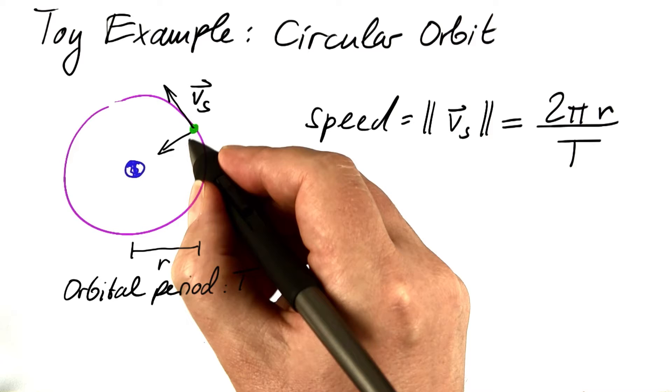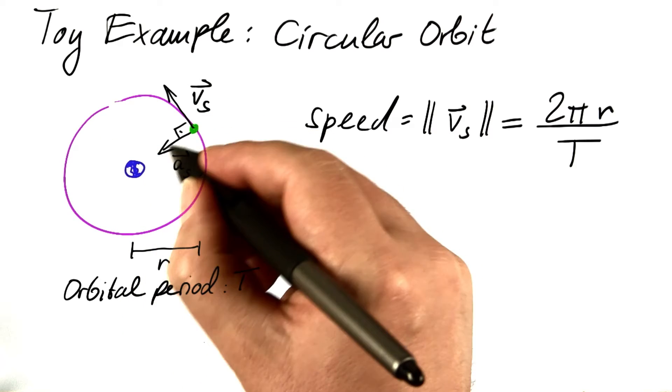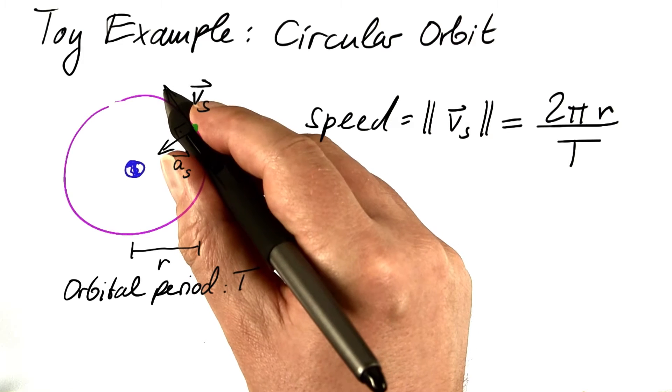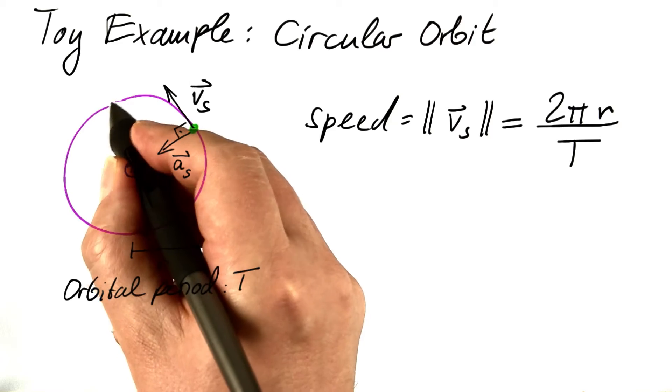The acceleration vector always points perpendicular to that orbit to the center of the Earth. The acceleration does not change the speed, the length of the velocity vector. It simply changes the direction of that vector.